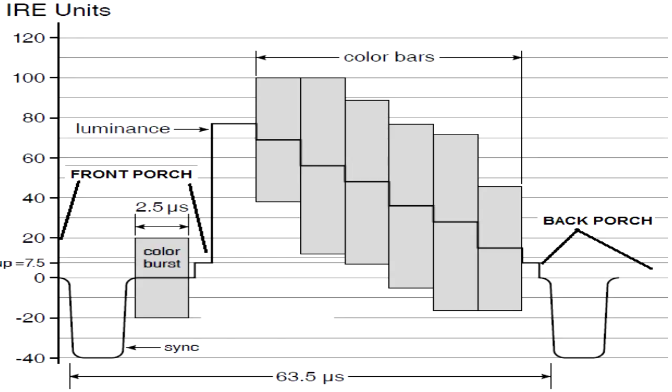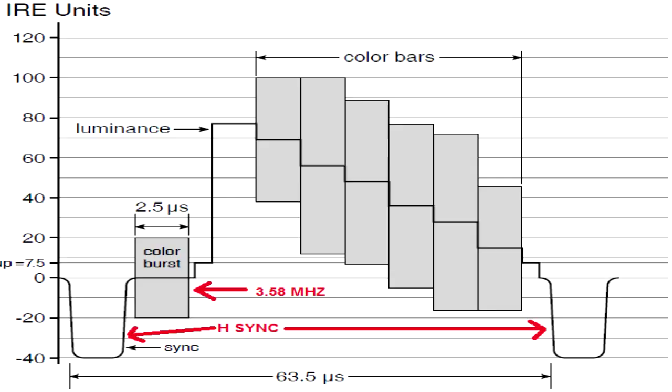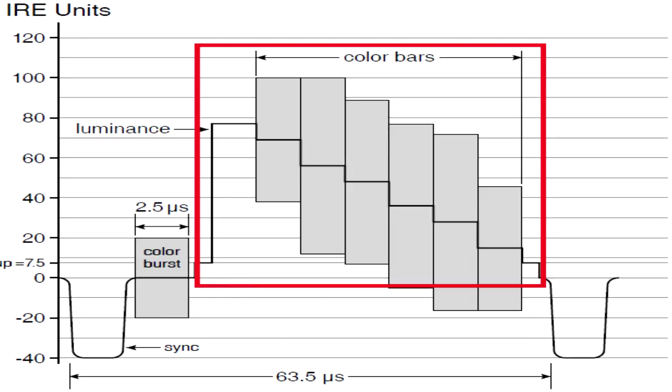The color burst is just a little snippet of 3.579545 MHz, and that's used to keep your color oscillators running in your television set. Then you go to a sync pulse - this is a horizontal sync pulse - then you have your back porch, then you have your one line of horizontal signal which you'd look at on a waveform monitor.